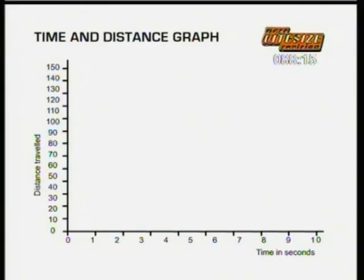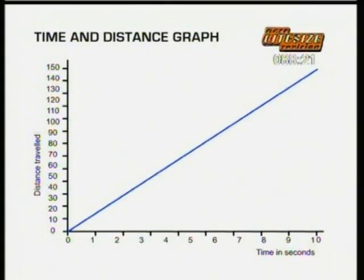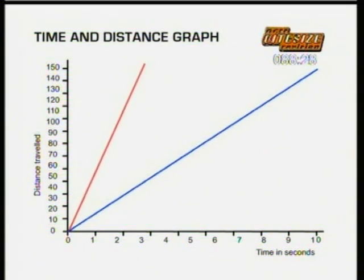A useful way of showing speed is on a time and distance graph. A straight line on the graph means that the speed is constant — the extra distance travelled each second is the same. The steeper the line, the faster the speed.